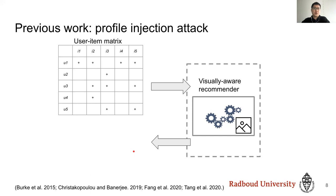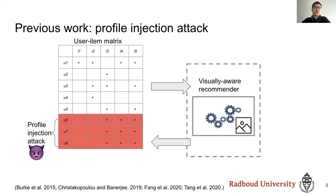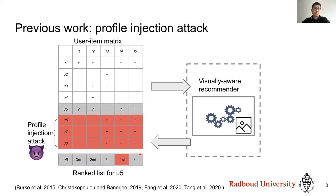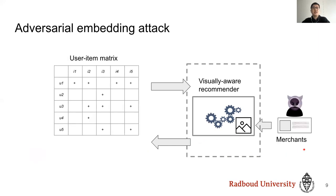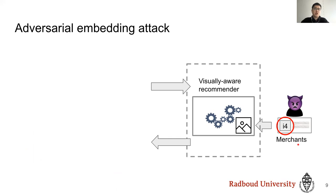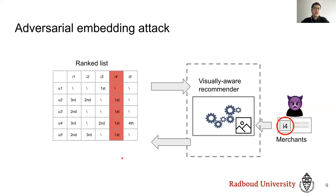Let's move to recommender system security. The most likely attackers in the e-commerce domain are merchants. Previous work mainly focused on attacking recommender systems by poisoning user-item interaction data, requiring fake user-item interaction information. In our work, we don't manipulate the user-item matrix. Instead, as a merchant, we carry out the attack by changing the item image. Changing item images is much easier and possibly much cheaper than creating fake user interactions. Based on image content, the visually aware recommender system will predict the target item as high relevance in the recommendation list.